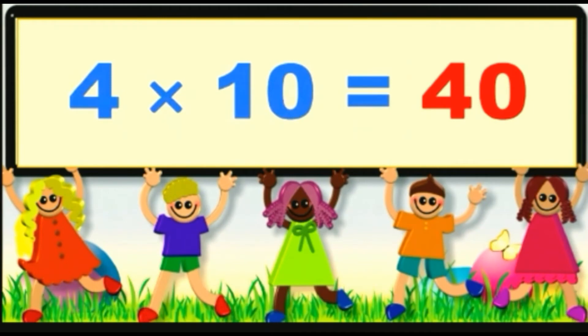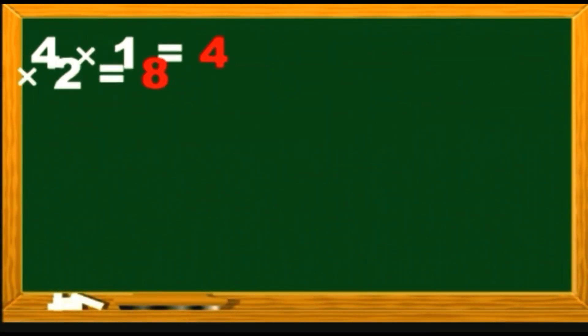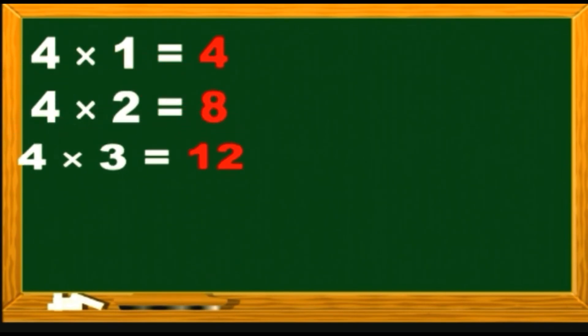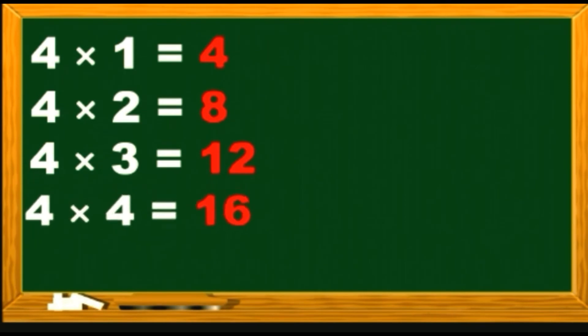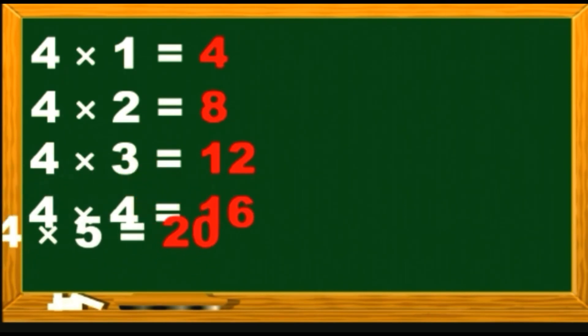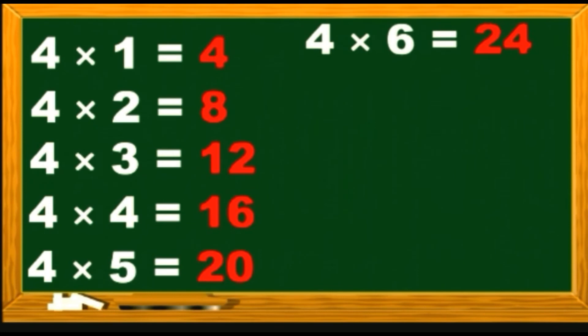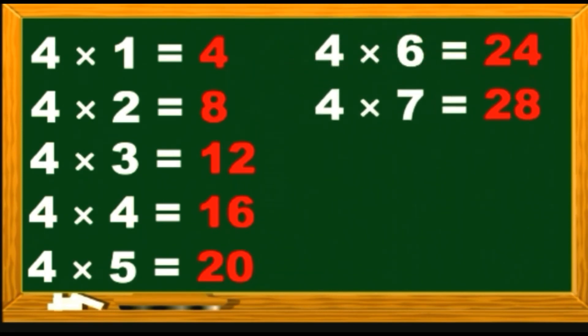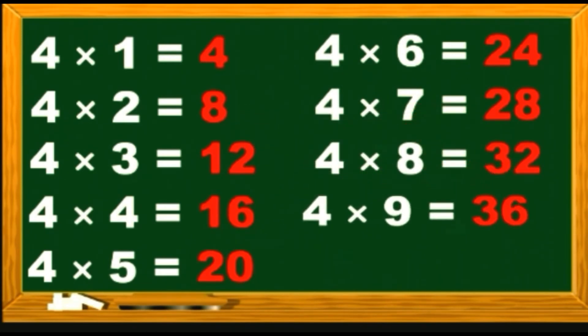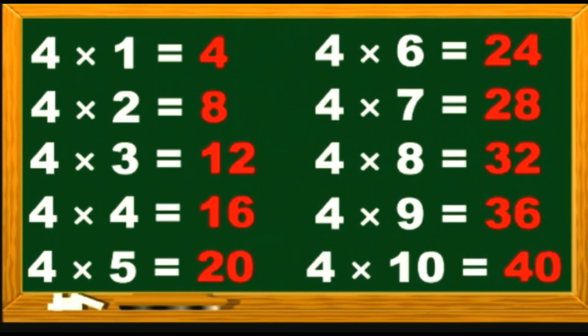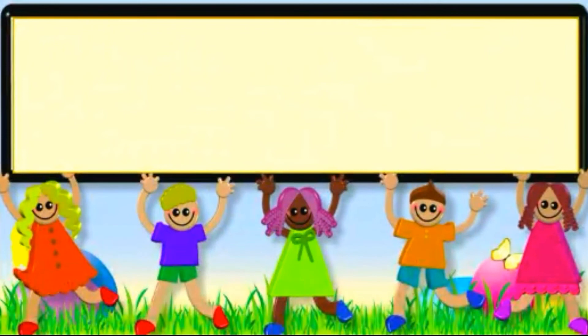Let's do it one more time. 4 1s are 4. 4 2s are 8. 4 3s are 12. 4 4s are 16. 4 5s are 20. 4 6s are 24. 4 7s are 28. 4 8s are 32. 4 9s are 36. 4 10s are 40. Now table of 5. 5 1s are 5.